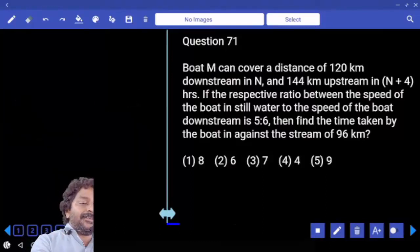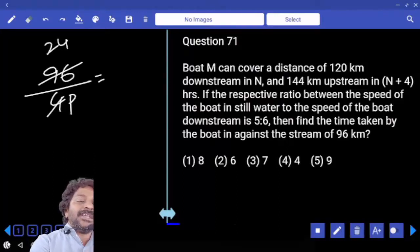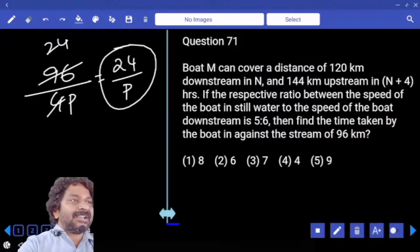Finally, we were asked to calculate time to cover 96 kilometers upstream. Upstream speed is equal to 4 parts only. 4 times how many? 96 by P. And this is your final answer. Your answer is going to be a factor of 24.